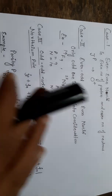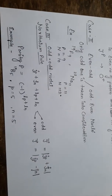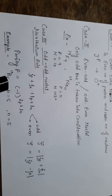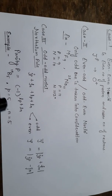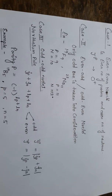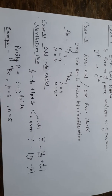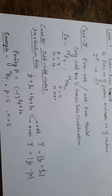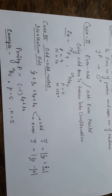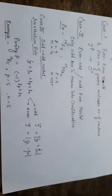An example of an odd-odd nucleus is 10B with 5 protons and 5 neutrons. That's all for today's lecture. In the next lecture, I will discuss some examples related to this topic. Thank you.